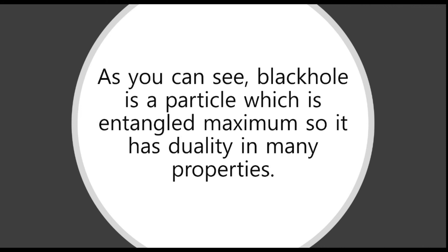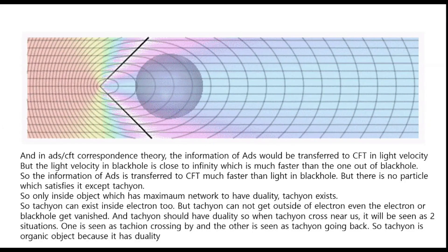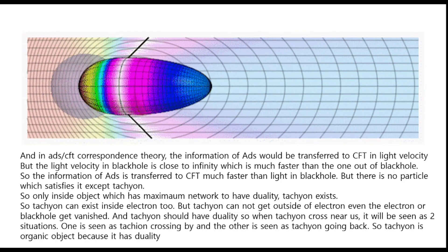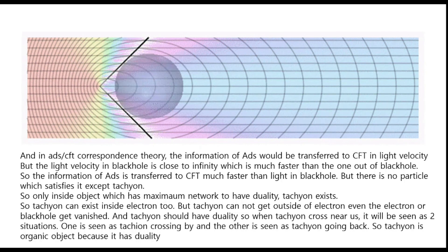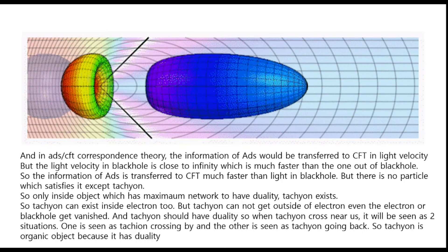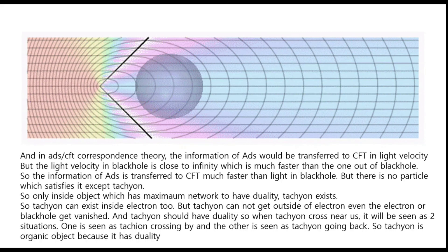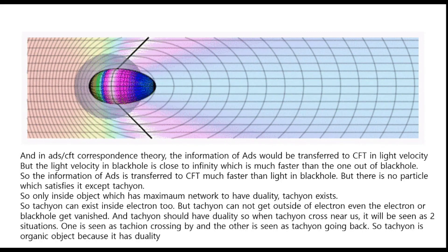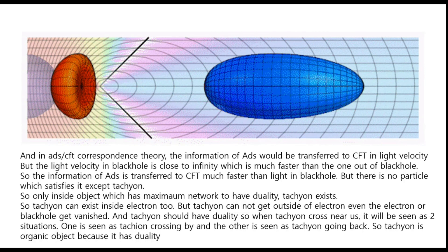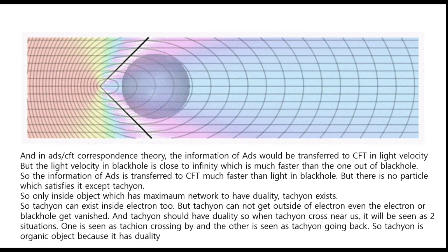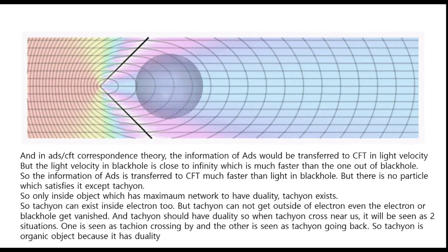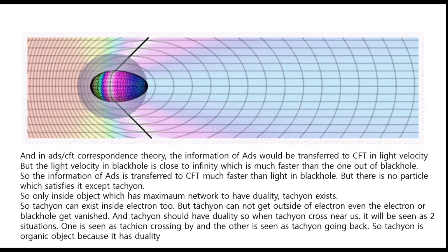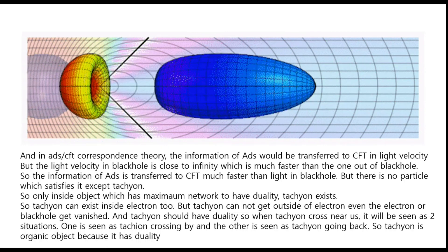As you can see, black hole is a particle which is entangled maximum, so it has duality in many properties. And in AdS-CFT correspondence theory, the information of AdS would be transferred to CFT in light velocity, but the light velocity in black hole is close to infinity, which is much faster than the one out of black hole. So the information of AdS is transferred to CFT much faster than light in black hole, but there is no particle which satisfies this except tachyon. So only inside objects which have maximum entanglement to have duality, tachyon exists.